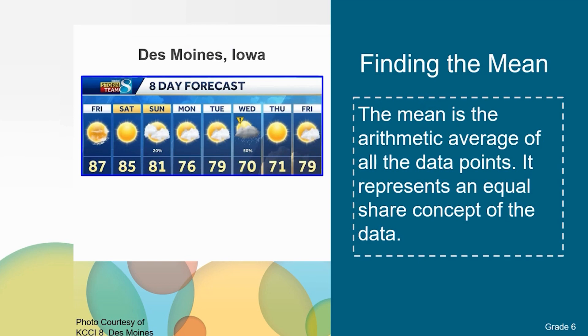Kayla is going to visit her grandmother in Des Moines. She's thinking about what she might want to wear. She notices the temperatures are close together, but some days are hotter or cooler than others. Kayla would like to find the average temperature it will be in Des Moines over the next week or so. Finding the average temperature will help her to pack and prepare for the weather.